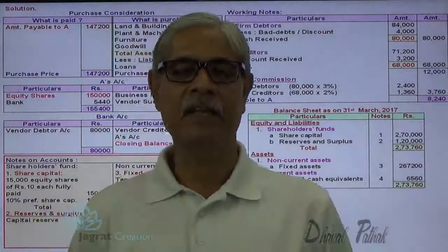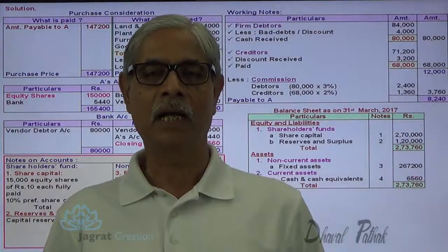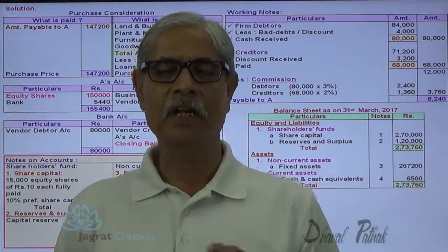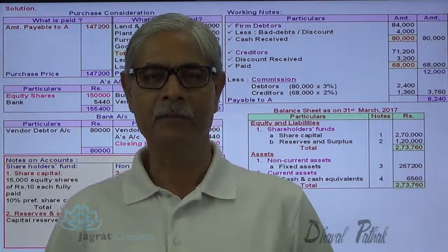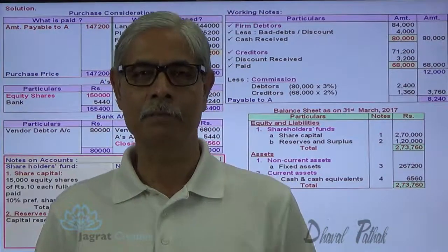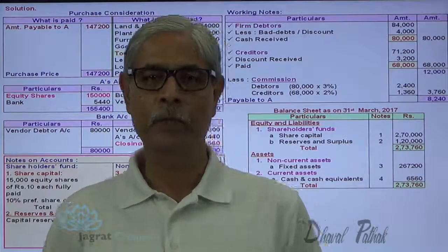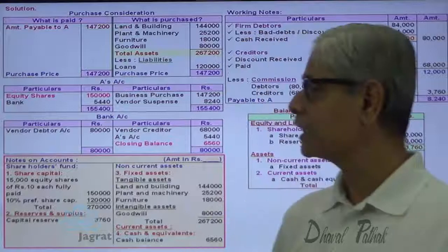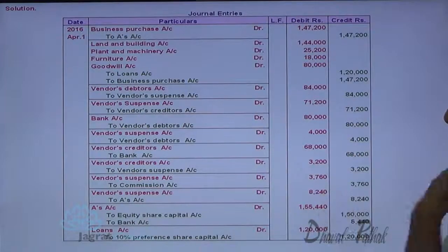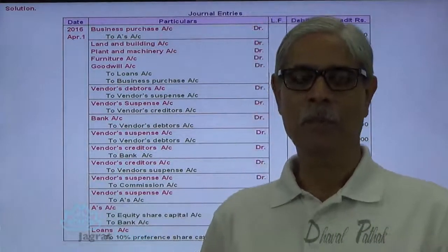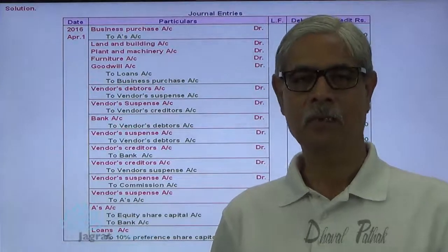This is the sum wherein I have tried to explain journal entries and preparation of the balance sheet. Journal entries are also explained repeatedly — first by reading the sum, and second by solving the sum. All the journal entries can be found at one place. This is how the sum gets solved. Thank you to all of you.